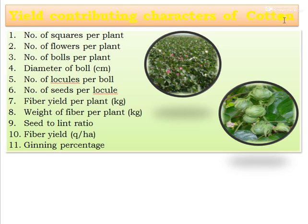The yield contributing characters of cotton include: number of squares per plant, number of flowers per plant, number of bolls per plant, diameter of the boll in centimetres, number of locules per boll, number of seeds per locule, fibre yield per plant in kg, weight of fibre per plant in kg, seed to lint ratio, fibre yield in quintals per hectare, and ginning percentage. These are the major yield contributing characters that indicate the fibre yield of cotton.